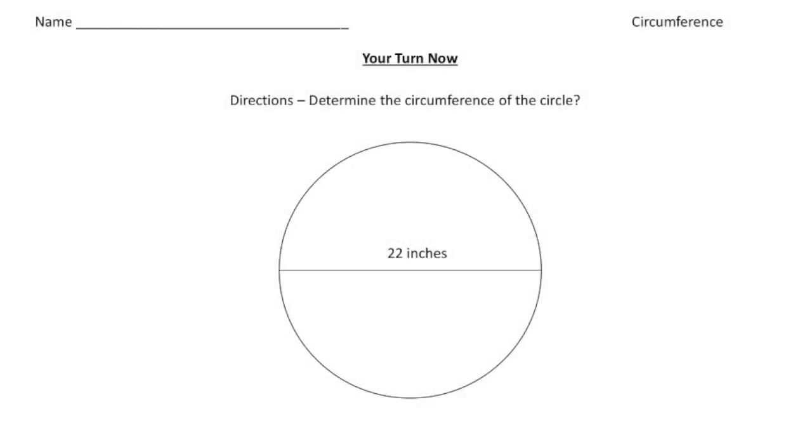Welcome back. Let's see you do this practice problem. So for this circle, we know the diameter is 22 inches. So again, it's always good to write down the formula. It kind of shows your thought process. So circumference is pi times d.